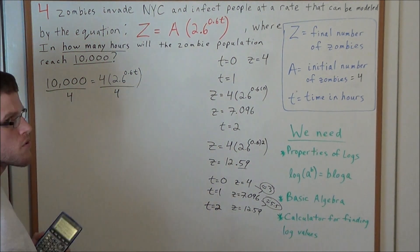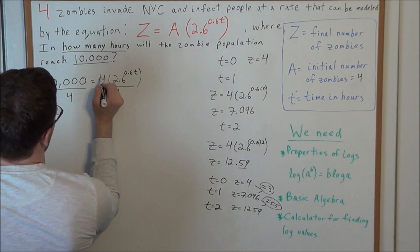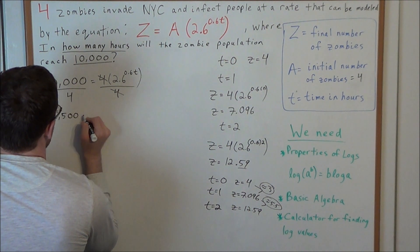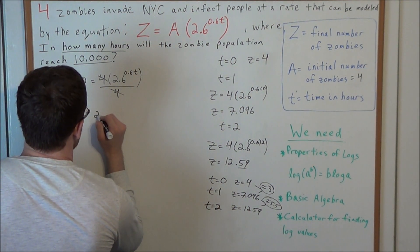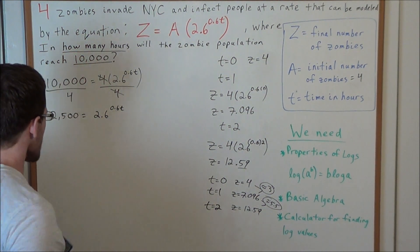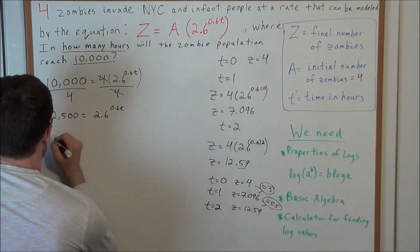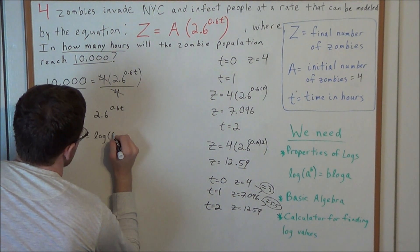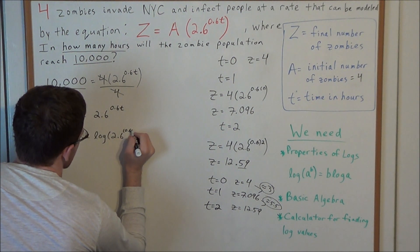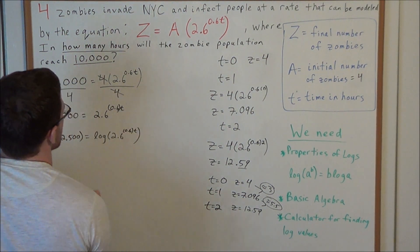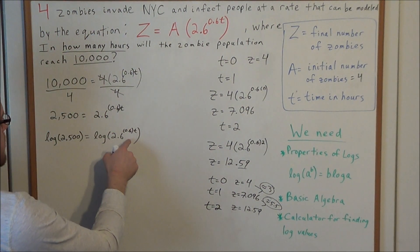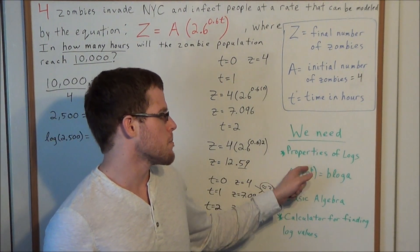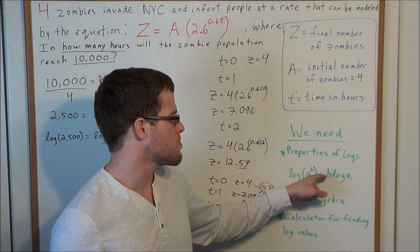Always simplify before using the log function. To simplify, divide both sides by 4, leaving just the exponential term on the right. We get 10,000 divided by 4 equals 2,500. So we have 2,500 equals 2.6 to the 0.6T. To solve for T in the exponent, we take the log of both sides: log(2500) equals log(2.6 to the 0.6T). Now we apply the exponent property of logs — log(A^B) equals B times log(A).